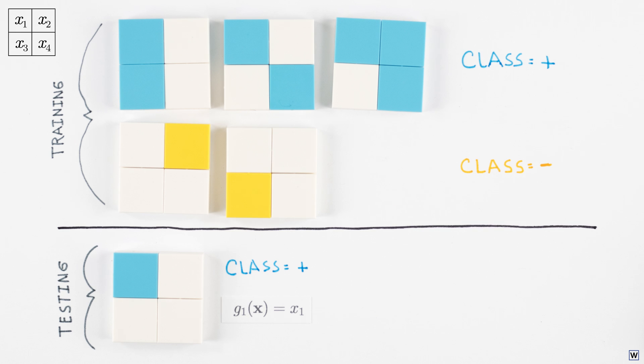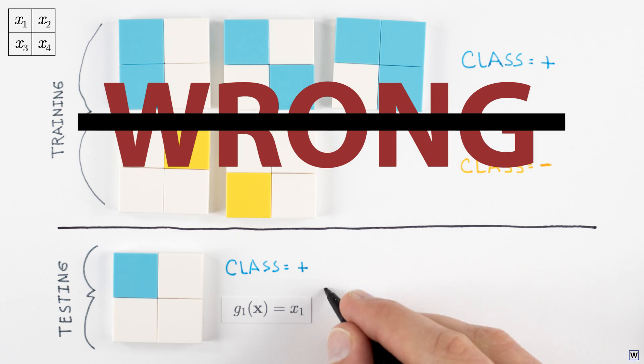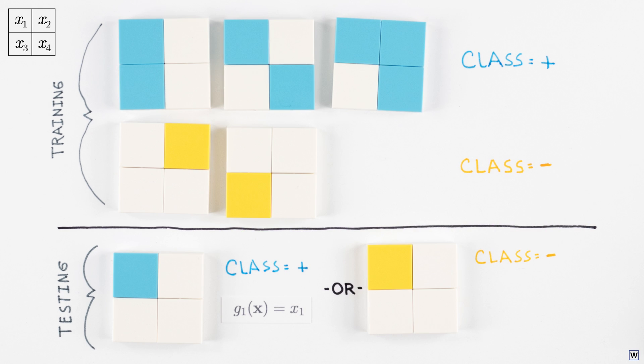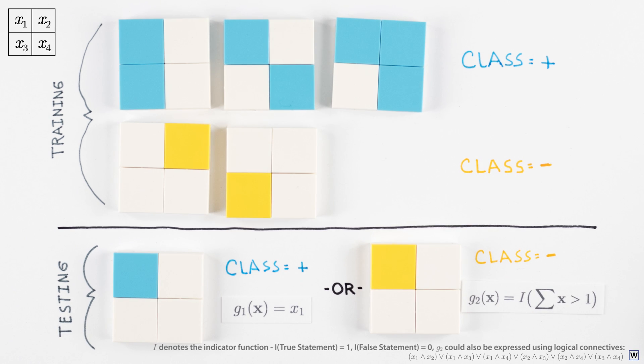Now if you set our new example as negative, you're also right. Your rule might have been something like count up the total number of colored in squares, and if the result is bigger than 1, the example is positive.